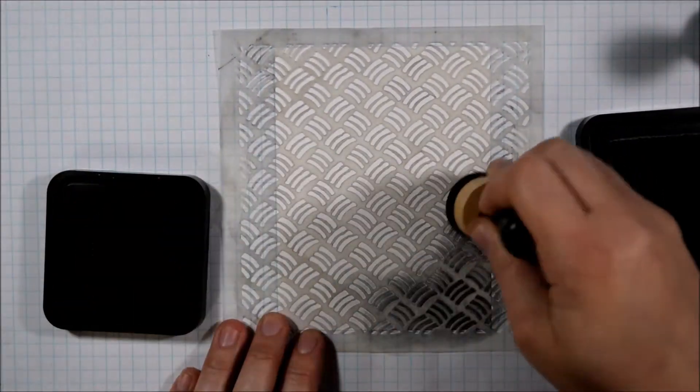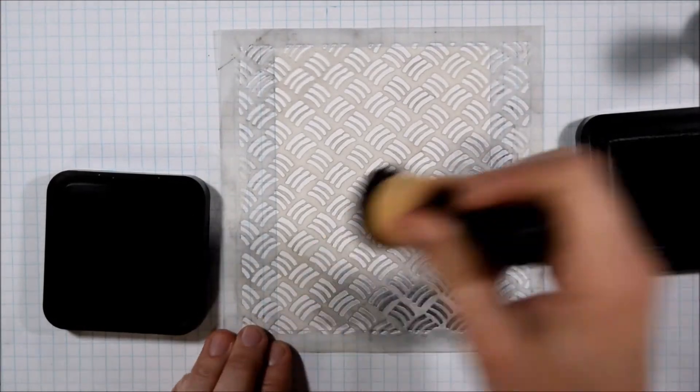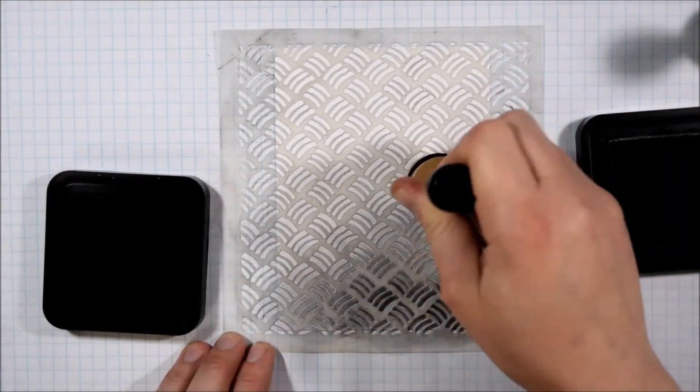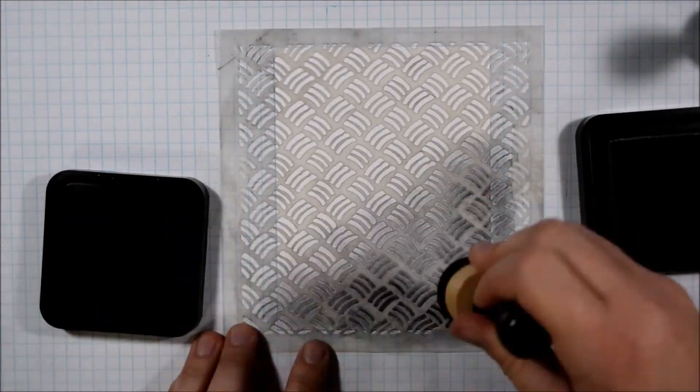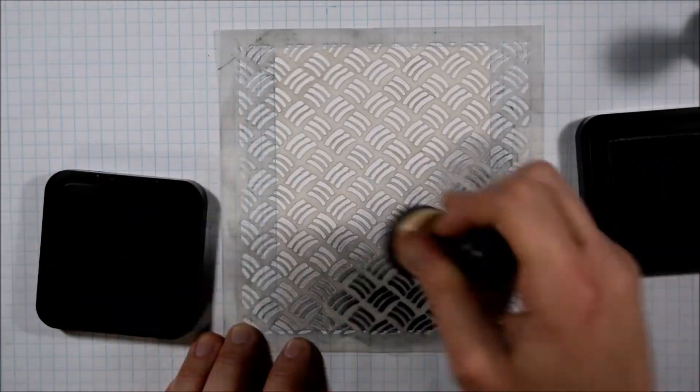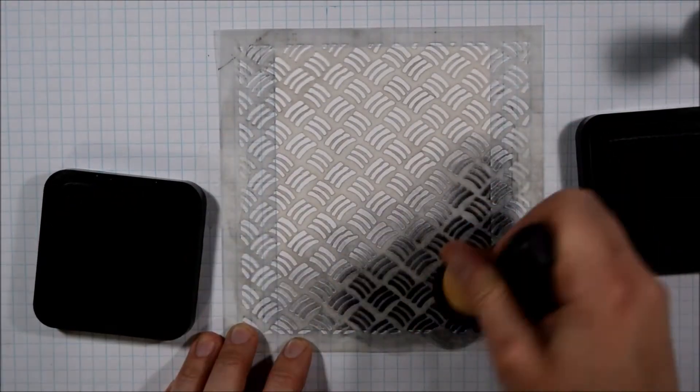So I am starting with this Scales stencil from Stencil Girl and two colors of Distress Ink. I have Black Soot and Hickory Smoke. The Hickory Smoke is a cool black ink and I think that it blends out well with the Black Soot.